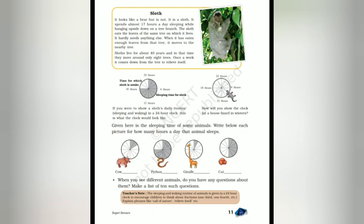Diagram में एक pie chart दिया हुआ है — circle में dark portion और white portion है। 24 hours दिखाए गए हैं। One part is equal to 2 hours। Sloth के dark parts हैं — 1, 2, 3, 4, 5, 6, 7, 8, 9 — यानि 9 × 2 = 18 hours। Sloth जो है 18 hours सोता है। और जागता कितने hours? 3 blocks × 2 = 6 hours — 6 hours जागता है।